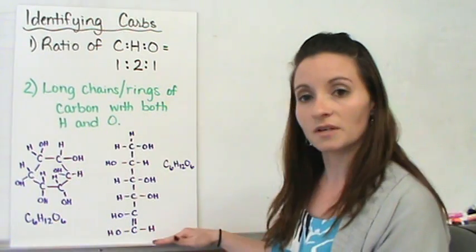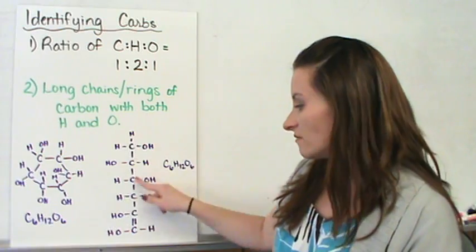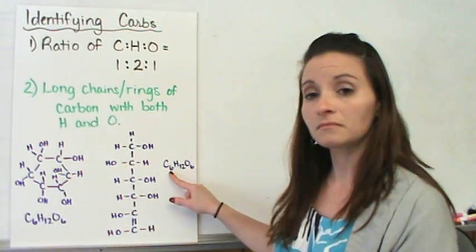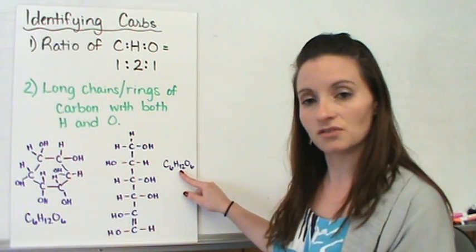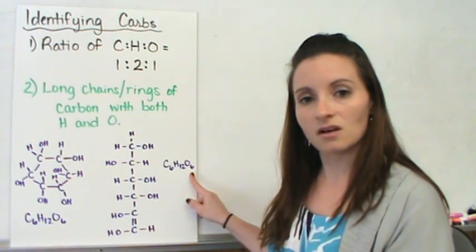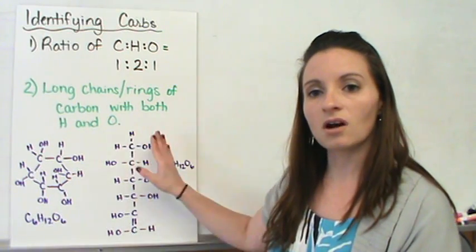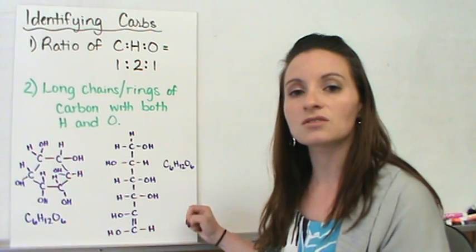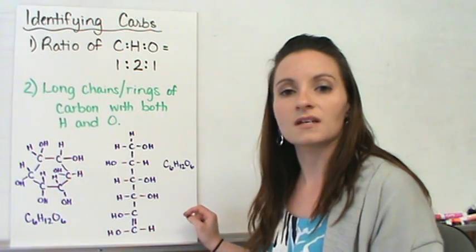This is also a chain of carbon. This chain of carbon, we've got 6 carbons, 12 hydrogens, and 6 oxygens. If we count all of those up, that's what we end up with. So we still have that 1 to 2 to 1 ratio, which gives us a carbohydrate.